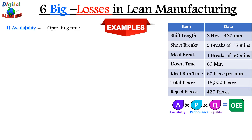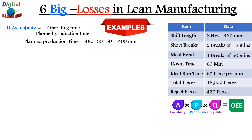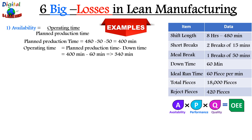The first loss calculated in terms of availability is operating time divided by planned production time. Planned production time is total shift length minus breaks — giving us 400 minutes. Operating time is planned production time minus downtime of 60 minutes, giving 340 minutes. Putting this in the formula: availability = 340 ÷ 400 = 85%. This means the machine was available 85% of the time; the remaining 15% is your availability loss due to downtime.